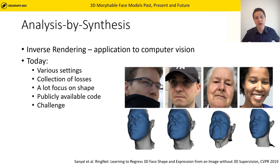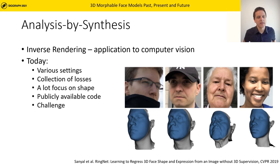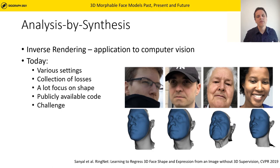A key application of 3D morphable models is as a prior in an analysis-by-synthesis setting, where we aim to reconstruct the 3D face from a 2D image or video. In the original SIGGRAPH 99 paper, stochastic gradient descent was used. Today this is still the dominant optimization technique, used in several different settings. Some methods aim at parameter estimation via a decoder, and others combine this with a differentiable renderer to accurately reconstruct the image. The main advantage is that the network can be trained on multiple images, leading to faster and more robust analysis by synthesis.